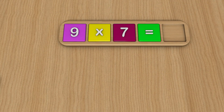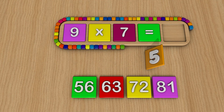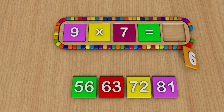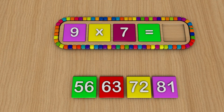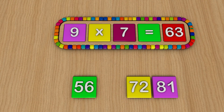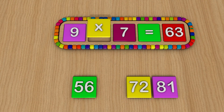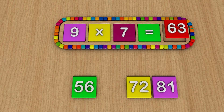9 times 7 equals... 63. 9 times 7 equals 63.